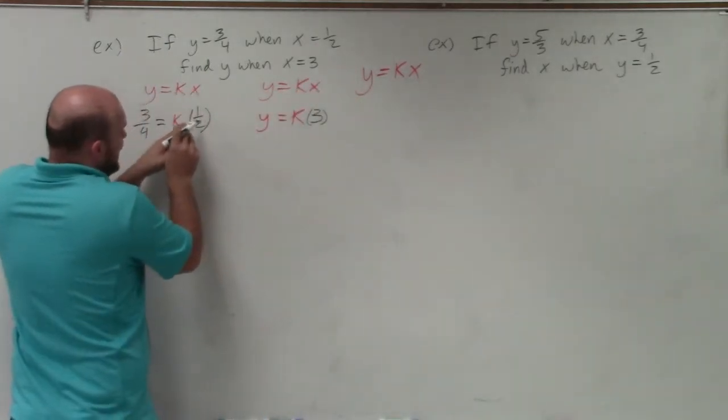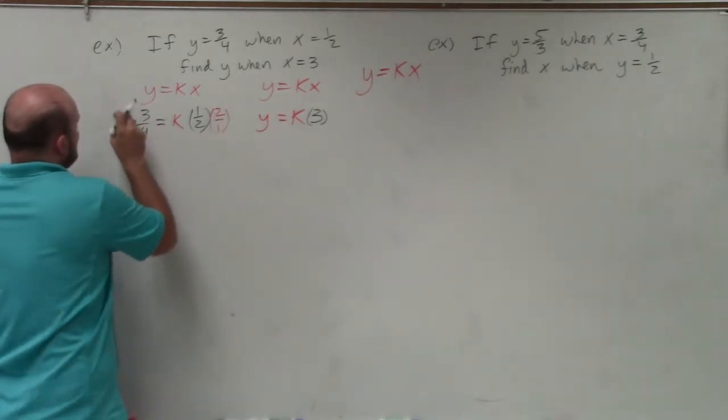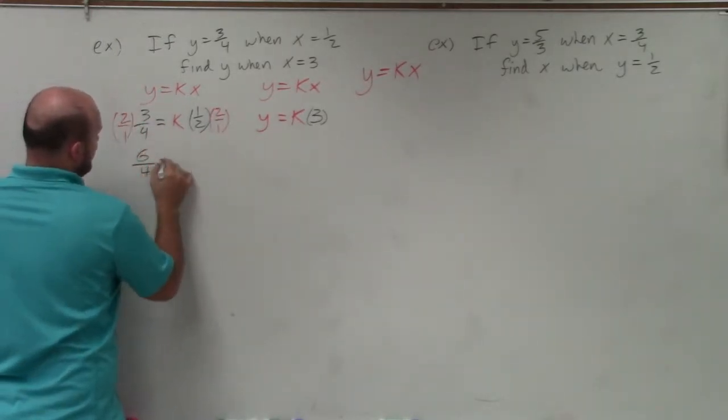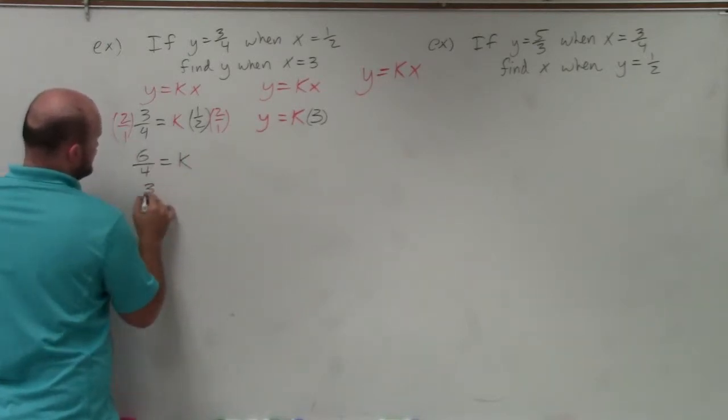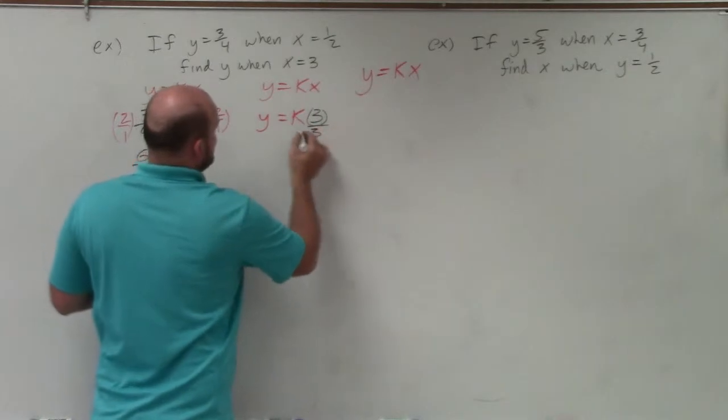Well, for this one, to solve when I have 1 half times k, I'm going to multiply by the reciprocal on both sides. When doing that, I get 6 over 4 equals k. I can reduce that down to 3 halves equals k. And then over here, I'll divide by 3.